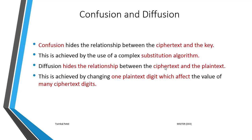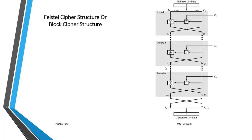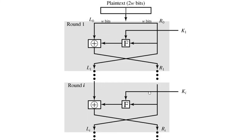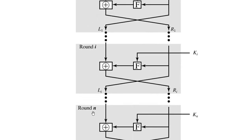Next we will see the Feistel cipher structure. The Feistel cipher is a block cipher structure. As you can see in the diagram, the Feistel cipher first takes a block of plaintext and divides it into two parts: a left half and a right half. This plaintext then goes through a certain number of rounds — generally n rounds, with common values being 16, 64, or 128.